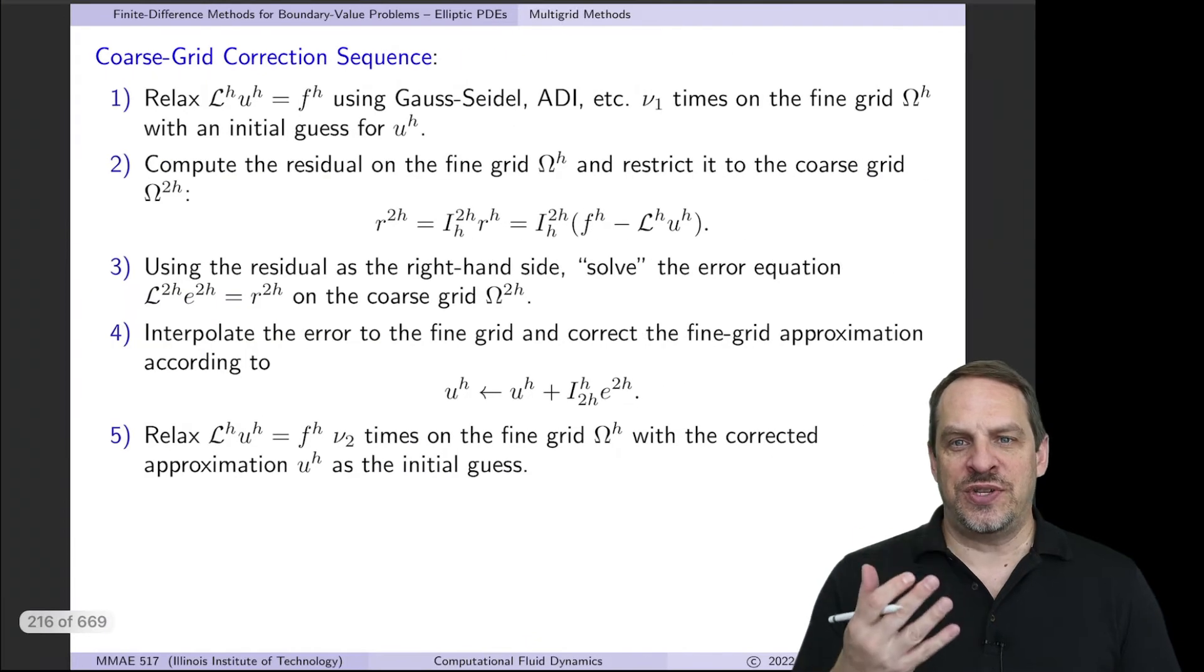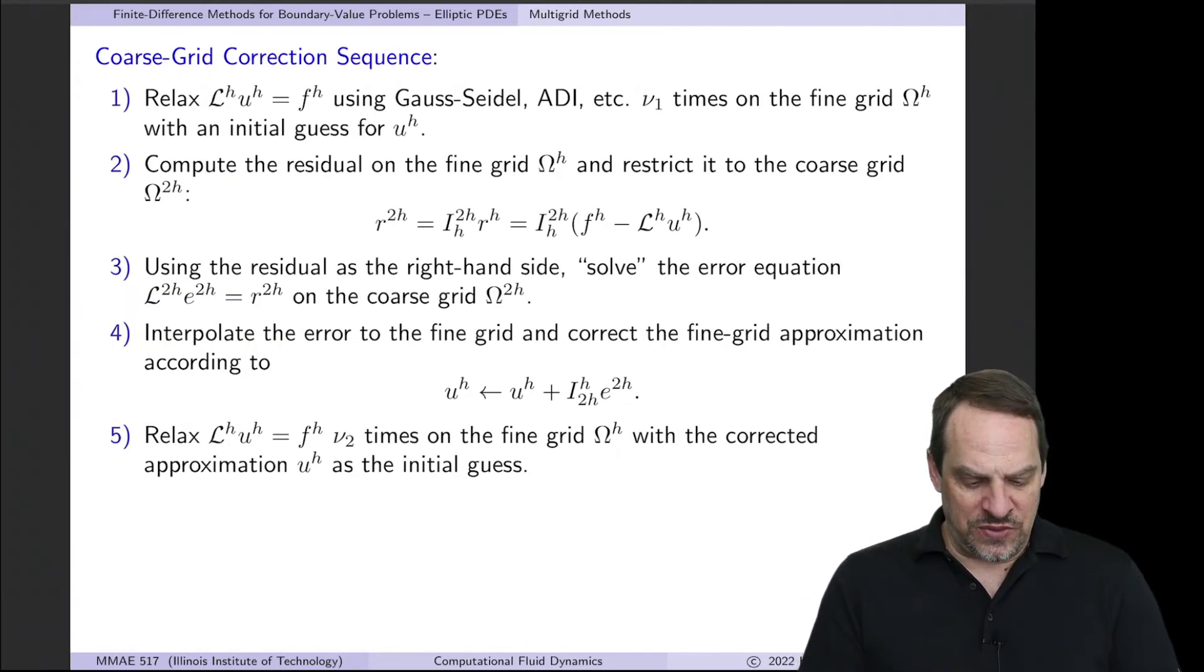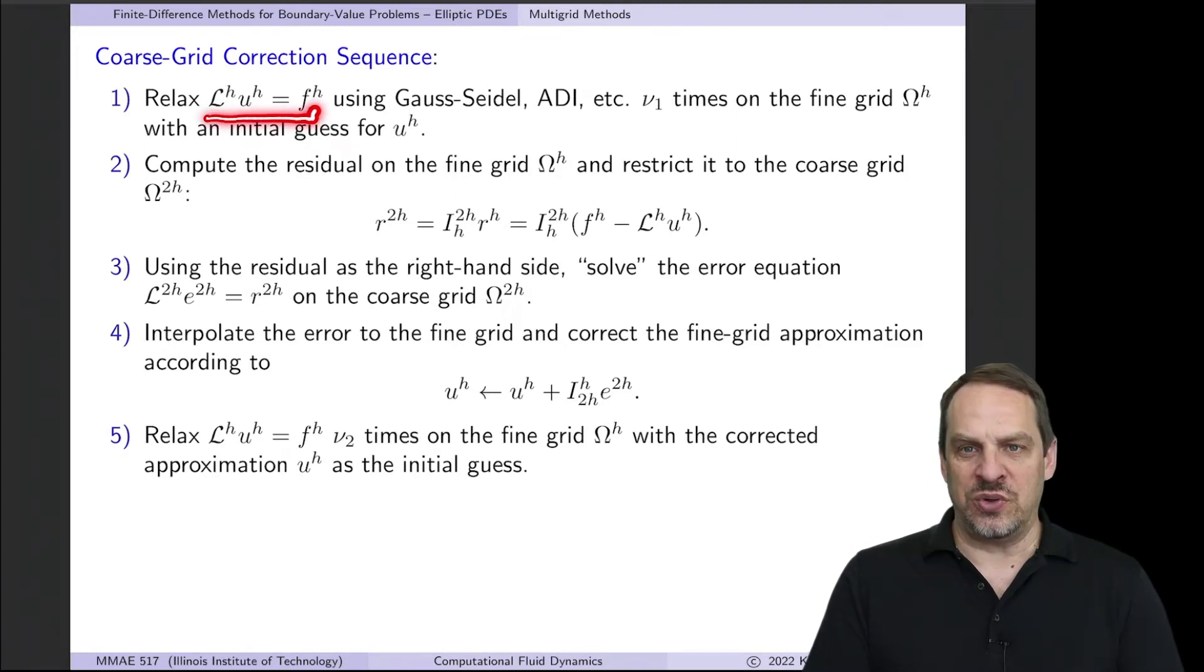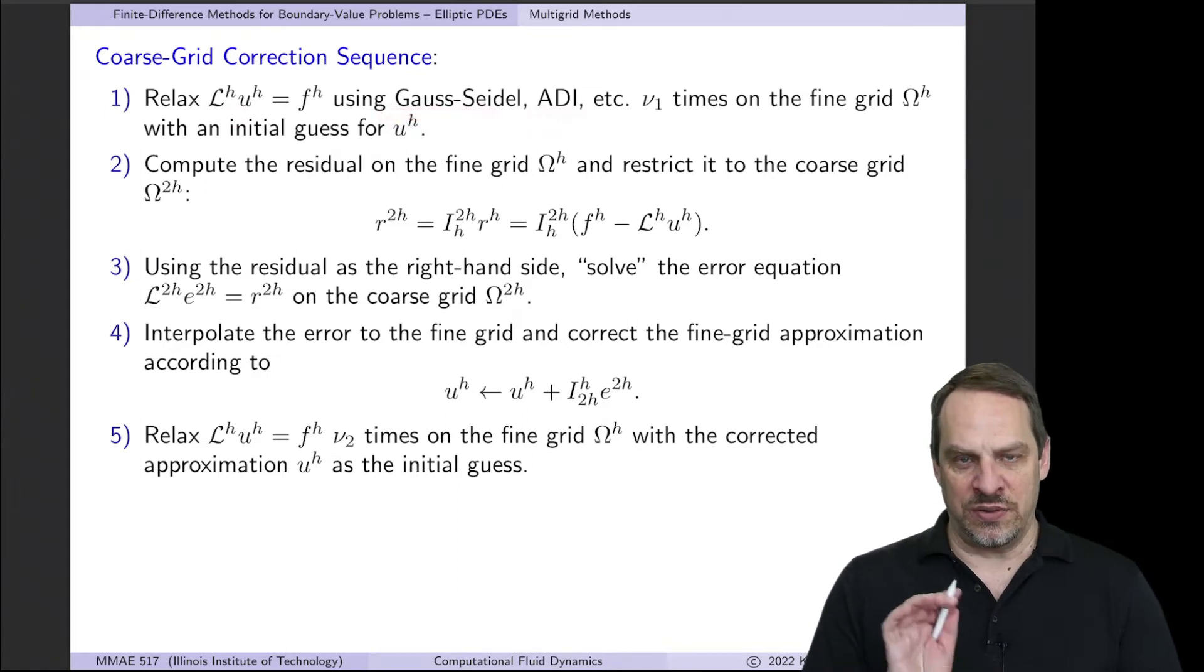So here are the steps in the coarse grid correction sequence. The first step is to relax or iterate on the original difference equation Lu=F on the fine grid. You see the h superscripts on all of these in this equation. So we're iterating, relaxing on the finest grid for the original variable U. We could use Gauss-Seidel, we could use ADI, and we're going to do that ν_1 times.